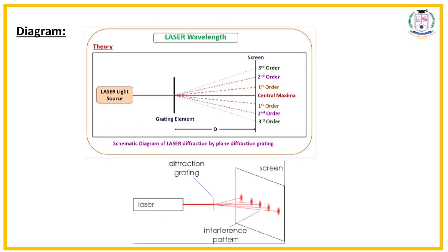In this slide, we have a schematic diagram of laser diffraction. We have a laser light source, a grating element, and a screen. The symbol D represents the distance between the grating and the screen. When the laser light is made to fall on the grating, we get a diffraction pattern. Because of diffraction, we can get different spots on the screen. The center spot is named the central maxima. The spots nearest to the central maxima on either side are called first order, next is second order, then third order, and so on.